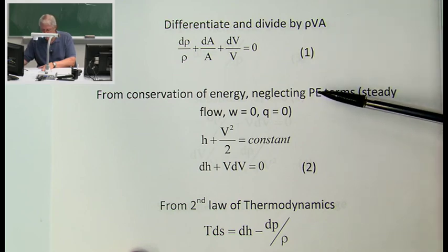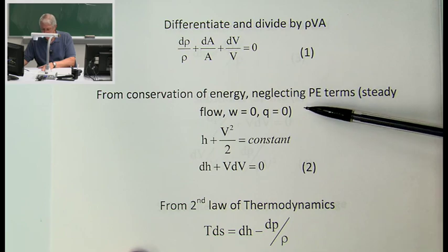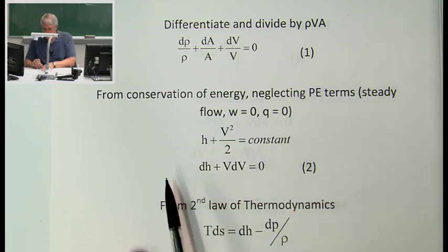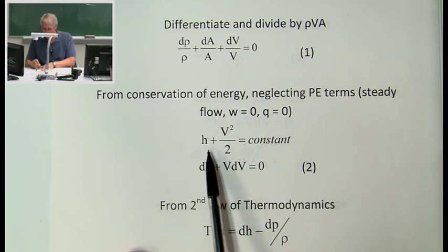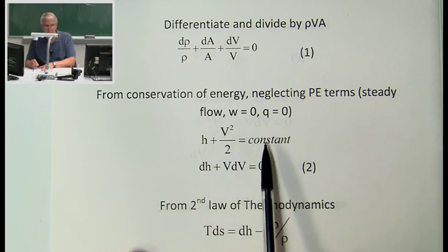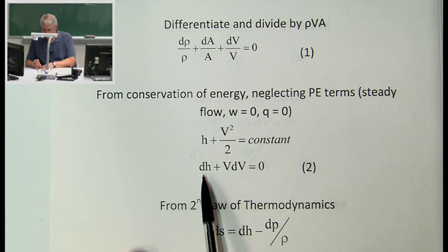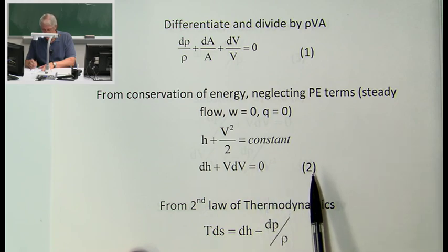From the conservation of energy, neglecting potential energy terms, assuming steady flow with no work and no heat transfer, we have enthalpy per unit mass plus V²/2 equals a constant. Differentiating: dH + V·dV = 0. We'll call that equation two.